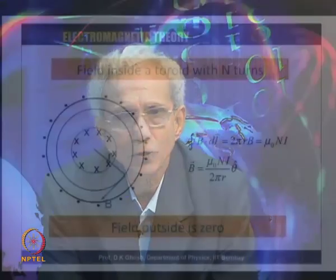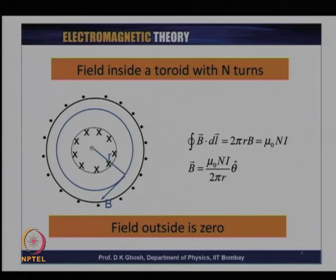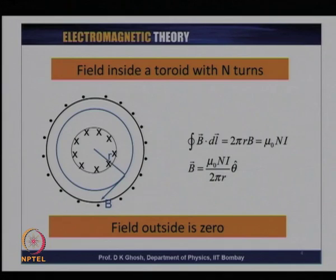The other important geometry is a toroid, which looks very much like a donut. The current in this case is going in through one edge and coming out from the other. If you take a circle of radius R, by symmetry the magnitude of the magnetic field everywhere will be the same and the direction will be tangent to the circle. As a result, the integral of B·dL turns out to be 2πr times B, because dL's direction is tangential and the magnetic field is also parallel to the tangent.